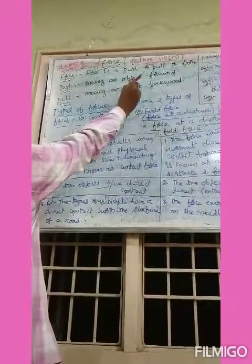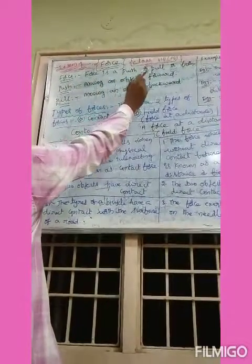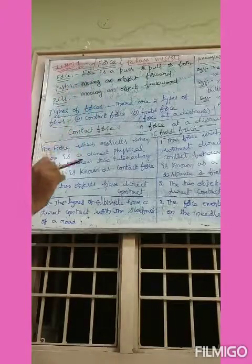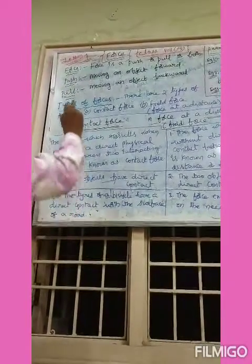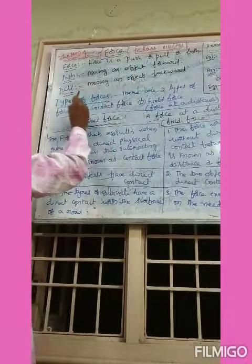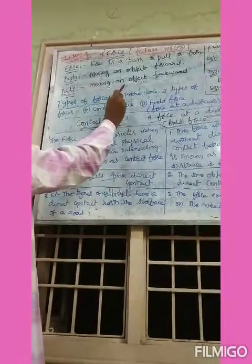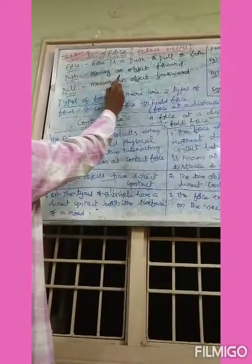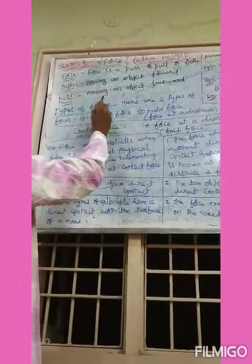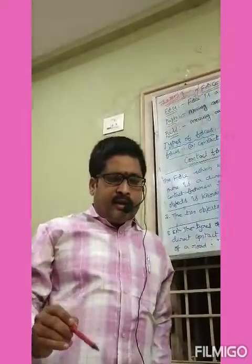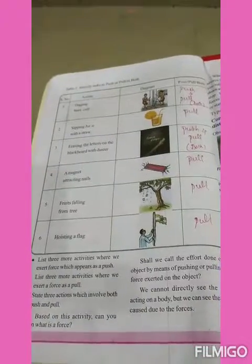So what is force? A force is a push or pull or both. What is push? Moving an object forward is called push. What is pull? Moving an object backward is called pull. Push means moving an object forward; pull means moving an object backward.